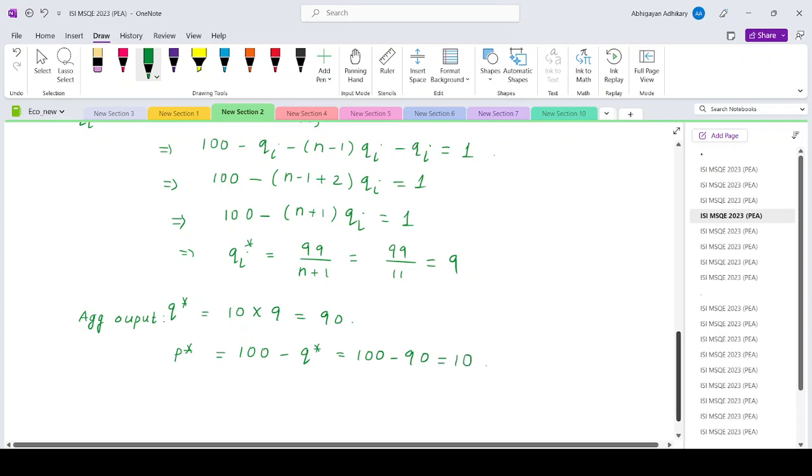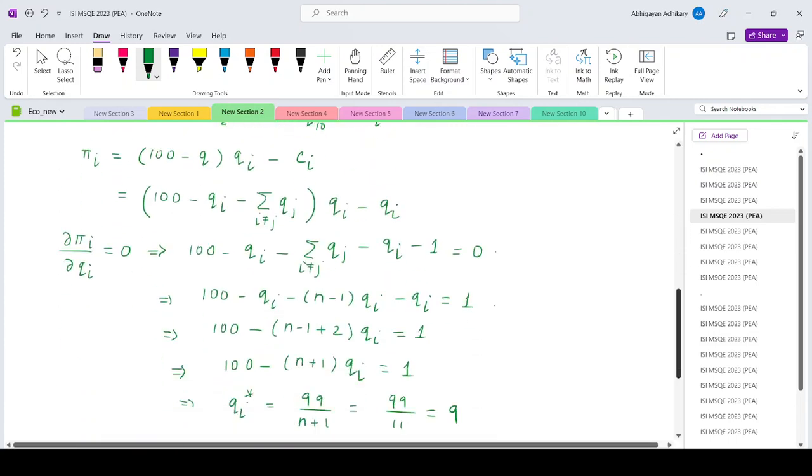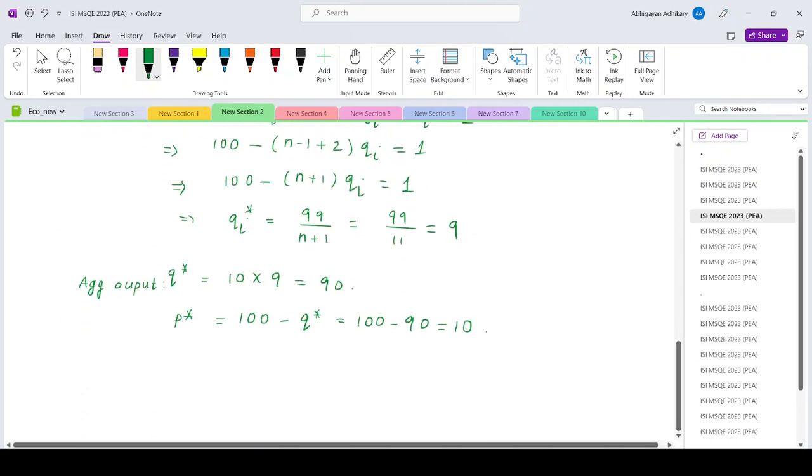Now in the question we are asked about the total deadweight loss. The deadweight loss is basically a measure of loss of efficiency, and that basically occurs when your output is lesser as compared to the competitive output.